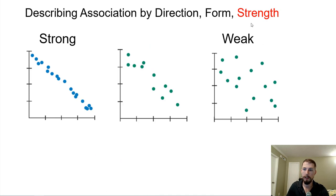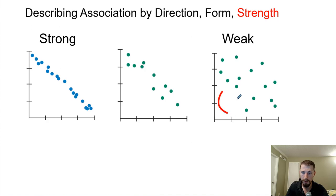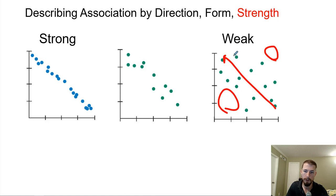Describing strength: this one is very strong because they're all packed together with not a lot of variation — a strong linear association. This one over here would be pretty weak, looking almost entirely random, though you could say there's still some negative trend. And this one in the middle we would probably say moderate.